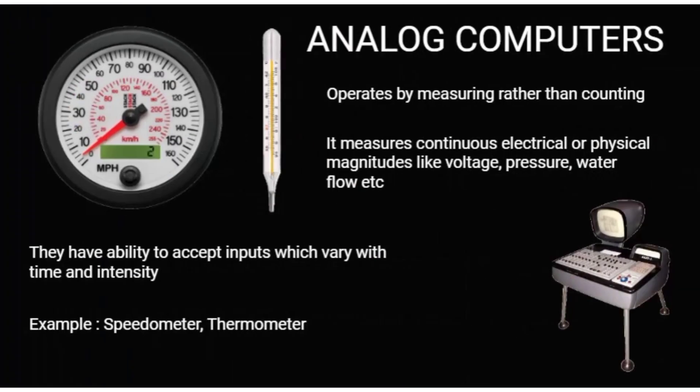Starting with our first category, which is with respect to type — the first computer is the analog computer. Analog means where data is accepted in continuous form. For example, at home, voltage or current flow are things that are continuous in nature, so analog computers process this kind of continuous data.